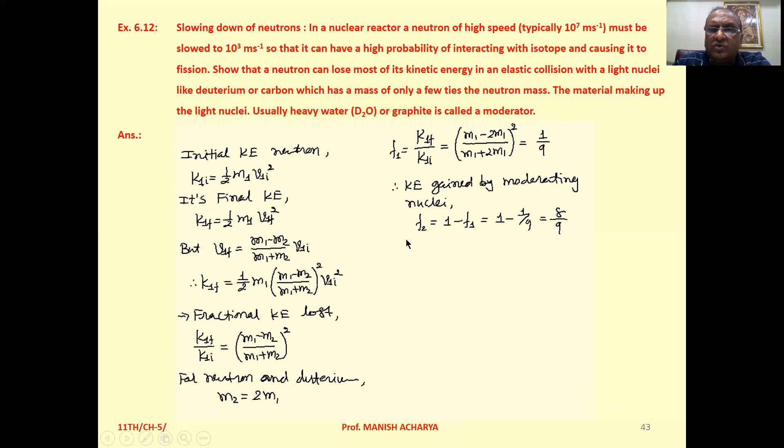This implies that during this collision, the neutron transfers kinetic energy approximately up to 8/9 to the fission element or fission nuclei. This is the maximum kinetic energy lost.